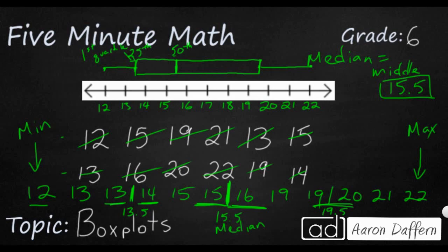That means 25% of the data is below this number right here, 13.5, and 75% is above. And we can say the same thing about this 19.5. It is at the 75th percentile. And sometimes we'll call it the third quartile.